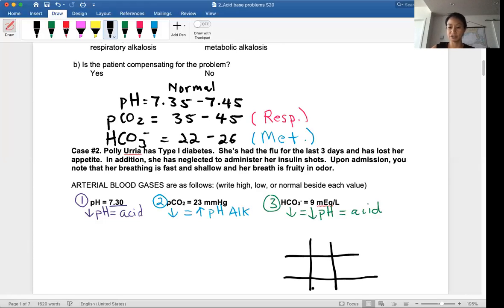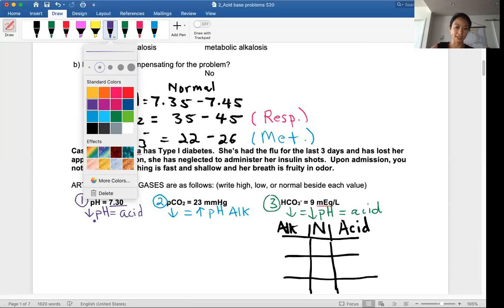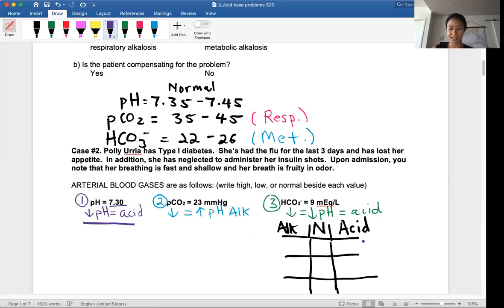In the tic-tac-toe method, why you want to start always is drawing a little tic-tac-toe. We're not going to play tic-tac-toe like a game. What we're going to do is look at the values. You want to write on top of the tic-tac-toe: this is the alkaline column, this is the normal pH column, and this is the low pH column, the acid. Every tic-tac-toe you'll set it up this way.